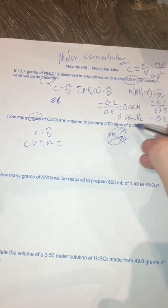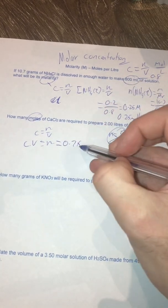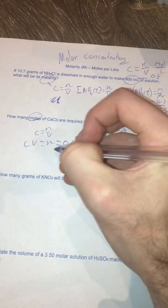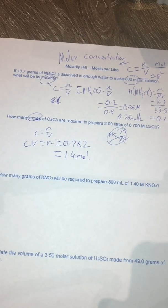So therefore that's going to be equal to my concentration, 0.7, times by how many liters I have, which is 2. And that's going to be equal to 1.4 mol. And that's all I have to do for that one.